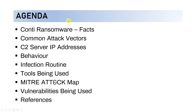We'll start with the agenda. We'll discuss Conti ransomware facts, then move on to the common attack factors, C2 server IP addresses, the behavior, infection routine, tools being used, followed by the MITRE attack map, and then we'll also talk about the vulnerabilities being used and references.